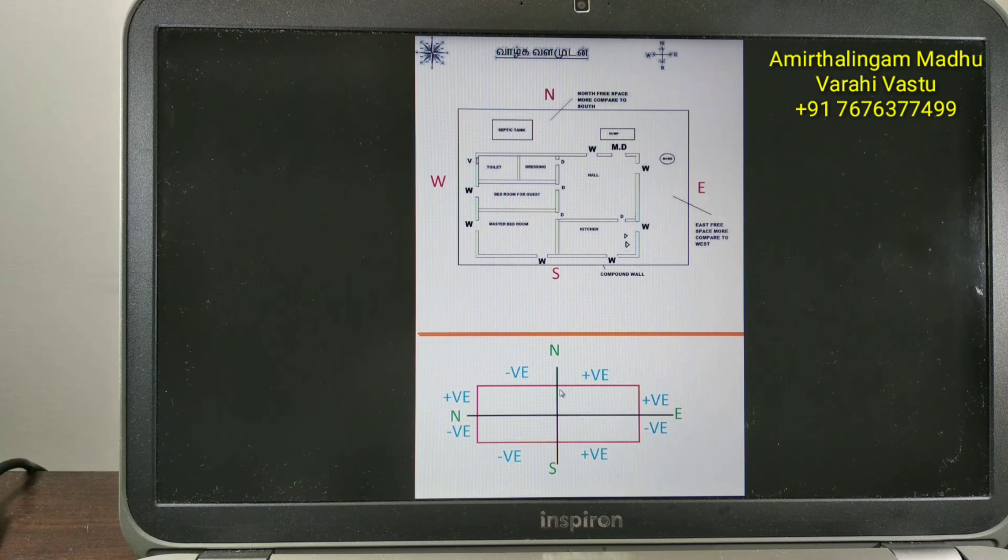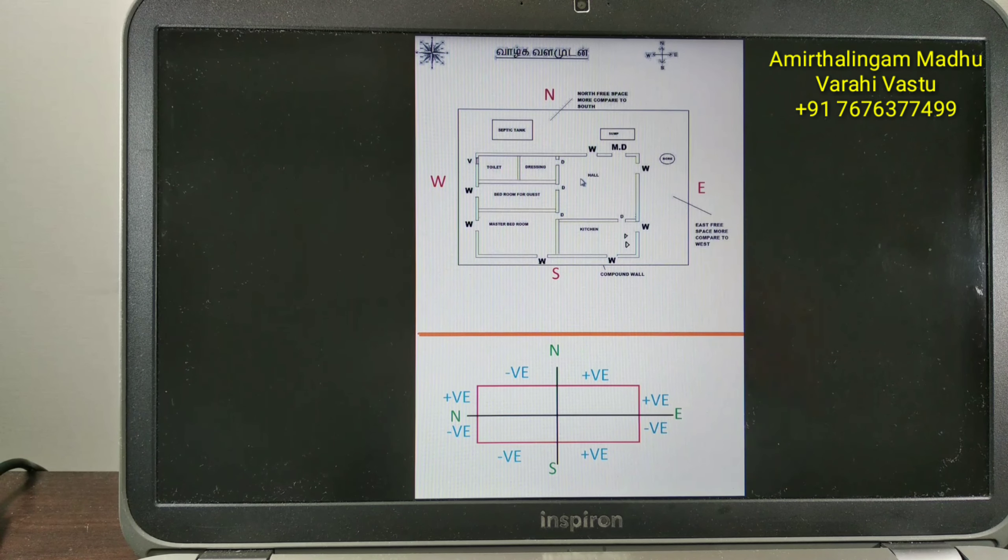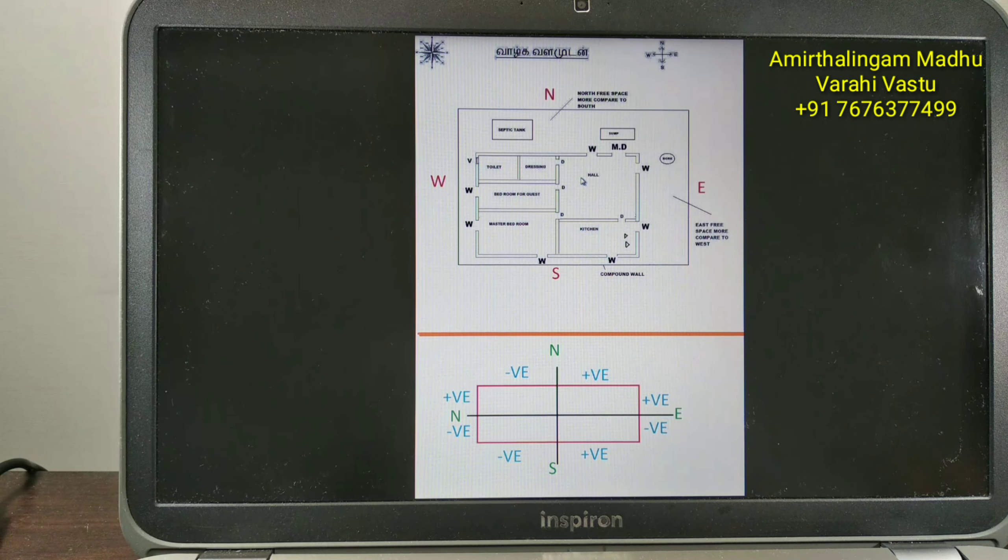So we will come to how to place the windows. For example, always you assume the atom concept. In case, if you break atom 1000 times, each atom consists of electron, proton, neutron. So same concept will apply in house. If you divide it into different rooms, the different room also we have to see the positive and negative.